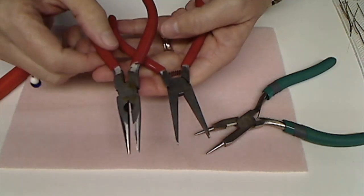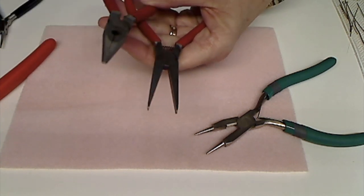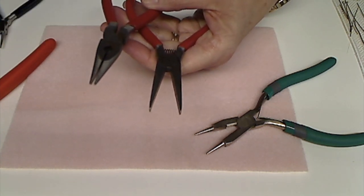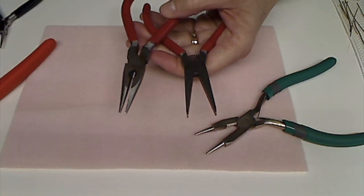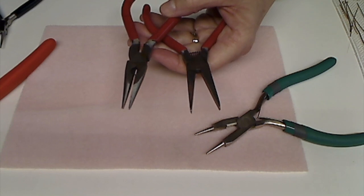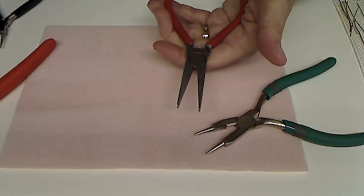And you'll see that that's kind of pointed. And I like this bigger, wider jaw on these. These are fairly cheap. And you can get them at Harbor Freight. These came in a set.